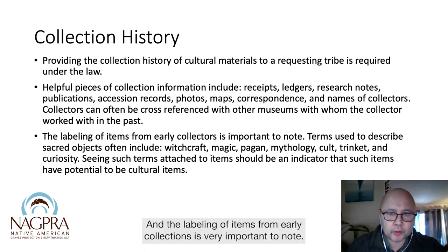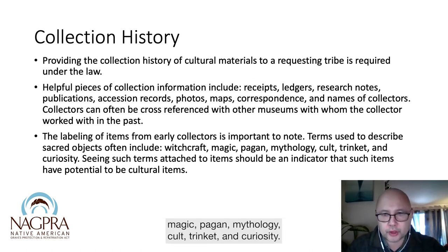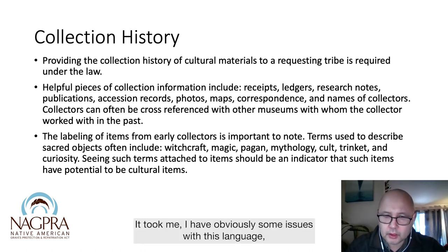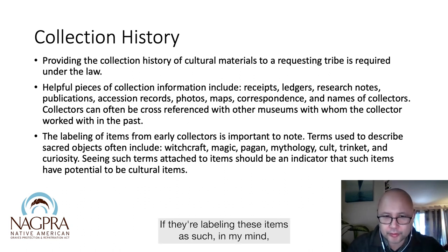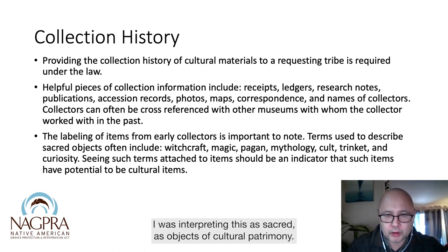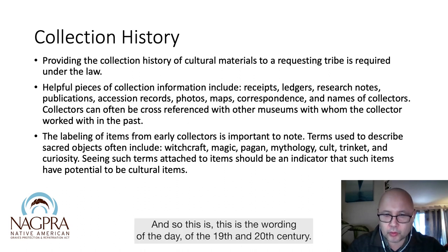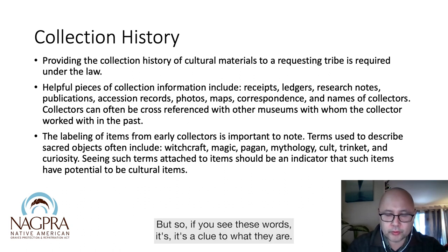The labeling of items from early collections is very important to note. Terms used to describe sacred objects often include witchcraft, magic, pagan, mythology, cult, trinket, and curiosity. I obviously have some issues with this language, but once I worked through my issues, I was able to use this as a tool. If they're labeling these items as such, in my mind I was interpreting this as sacred, as object of cultural patrimony. This is the wording of the day of the 19th and 20th century — if you see these words, it's a clue to what they are.